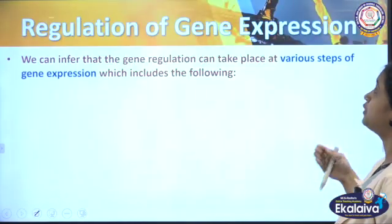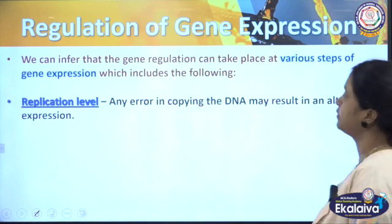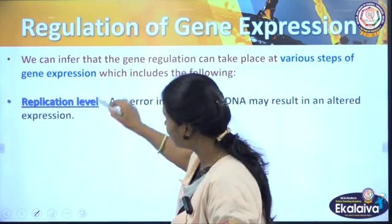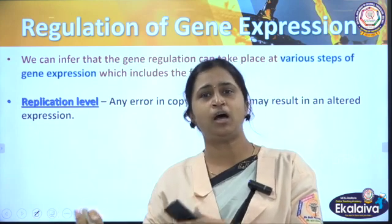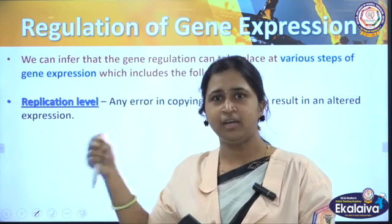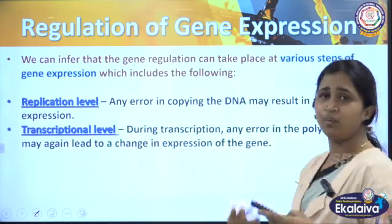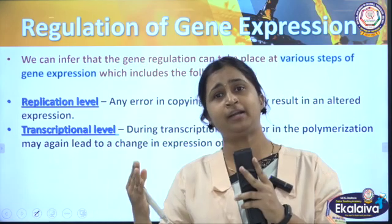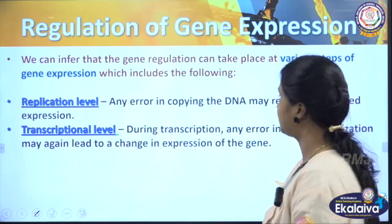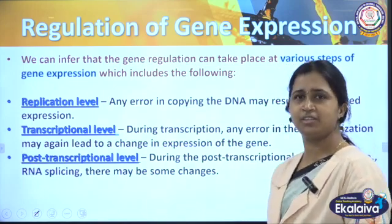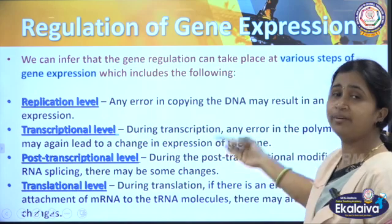So how is gene expression going to be regulated? We have discussed DNA replication, transcription, and translation. At each level there can be regulation. First, at the replication level — even replication cannot happen all the time and must be regulated. Then at the transcriptional level, during DNA to mRNA conversion, regulation also takes place. Next, at the post-transcriptional level, such as during translation and after mRNA comes out of the nucleus, regulation occurs as well. These are the various levels of regulation of gene expression — this is an overview.